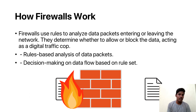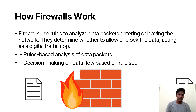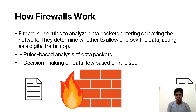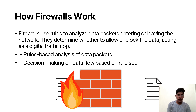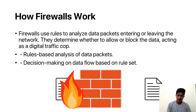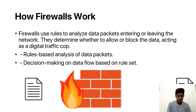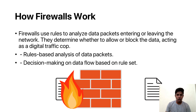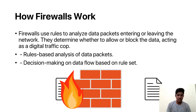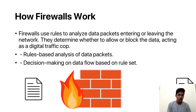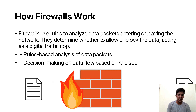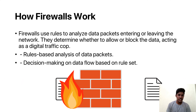Firewalls operate based on predefined rules. As each data packet flows through the network, the firewall examines them against these rules. It looks at details like where the data is coming from, where it is going, and what kind of data it is. If everything aligns with the predefined rules, the firewall allows it; otherwise, it puts up a red flag. Based on the rules configured by the network administrator, the firewall decides whether to allow or block a packet. Rules can be specific, such as allowing or blocking traffic based on IP addresses, port numbers, or protocols. Some firewalls even go beyond this and inspect the actual content of the data packets, searching for signs of potential threats.